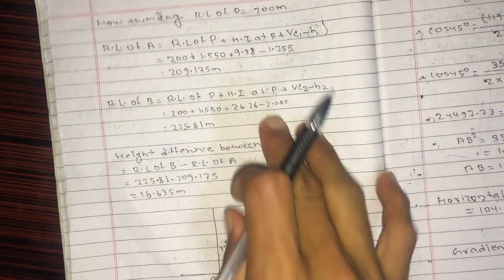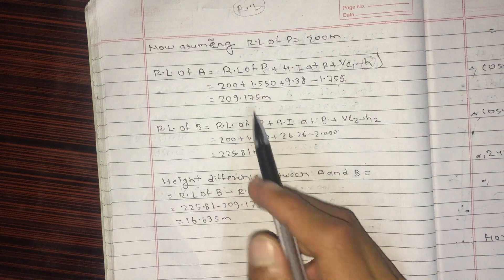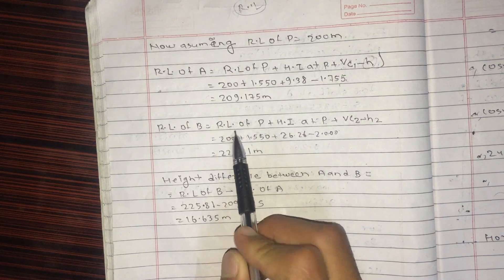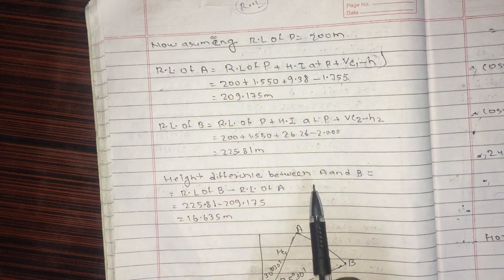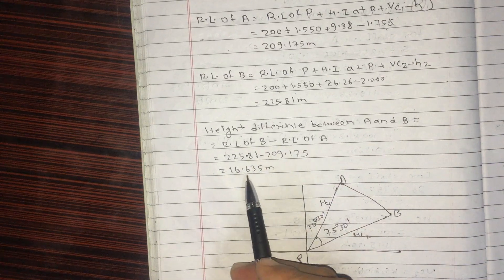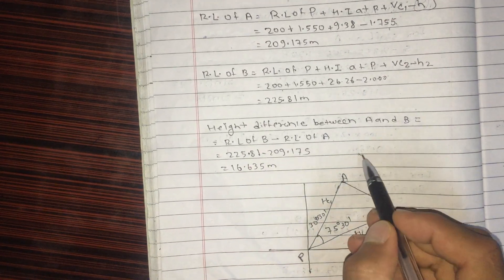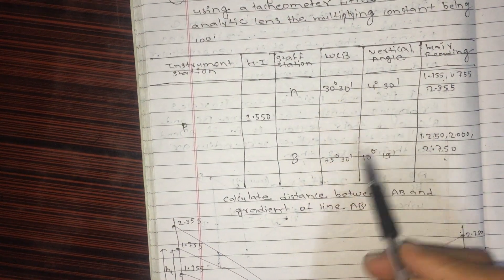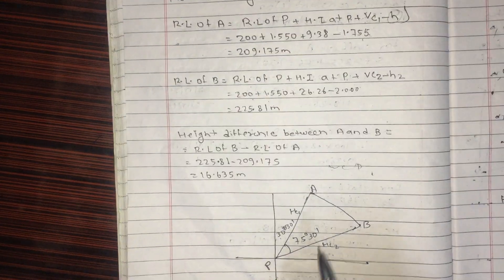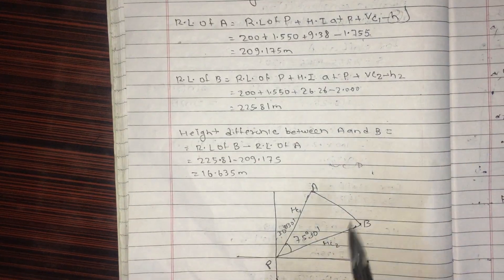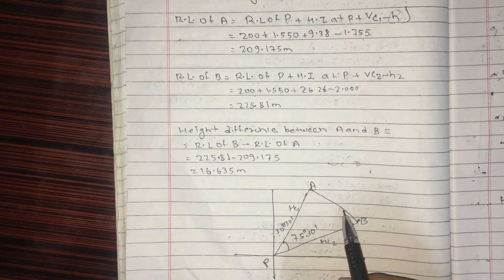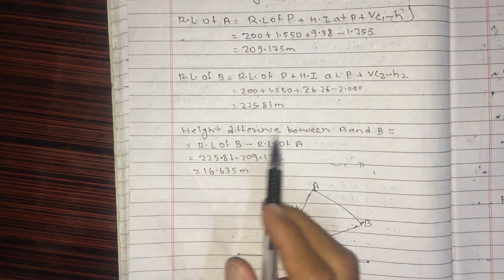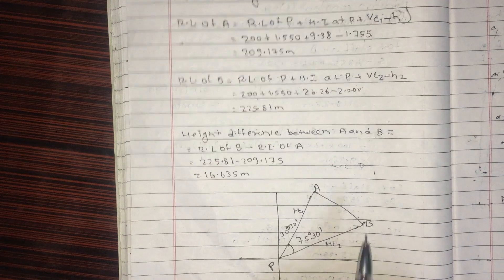The difference in elevation is 16.65. WCB bearing is 75 degrees 30 minutes. The horizontal distance for the line is calculated, and the gradient is equal to the difference in elevation divided by the slope distance.